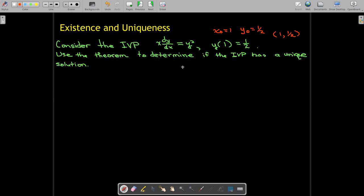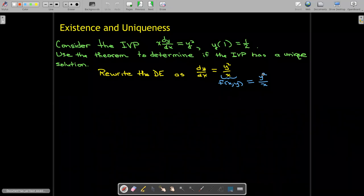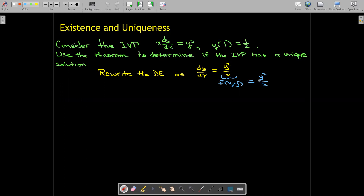All right, so what does the theorem require? Well, first of all, let's rewrite the differential equation in the form of the theorem. So we have dy/dx = y²/x, and that's telling me that my function f(x,y) equals y²/x. Now we have to see that, okay, as long as x is not equal to zero, this function is continuous.